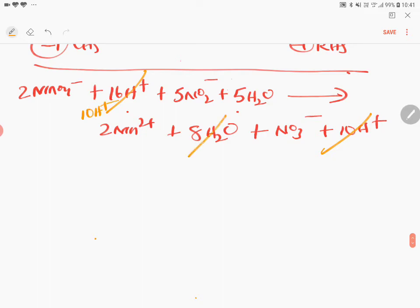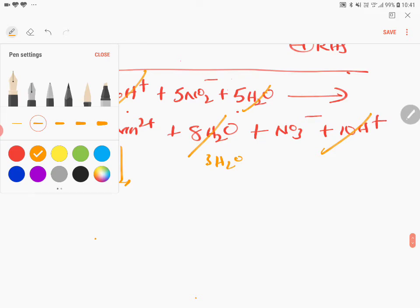Water. 8 minus 5 is 3. So where is higher? 8 is higher side, so 3 H2O will come. Now write the final equation. You will get the answer.